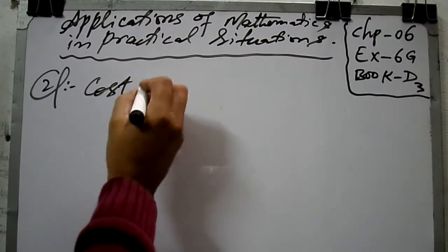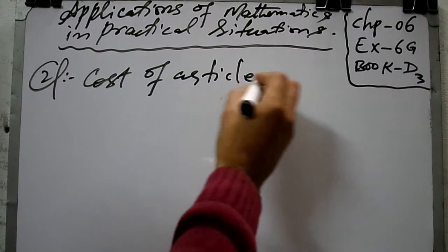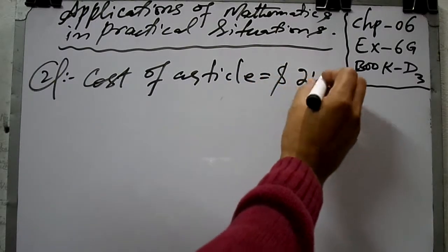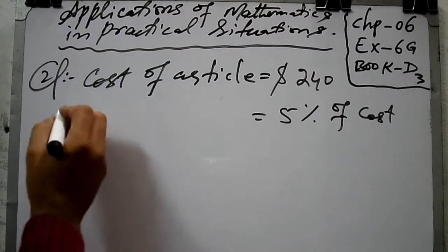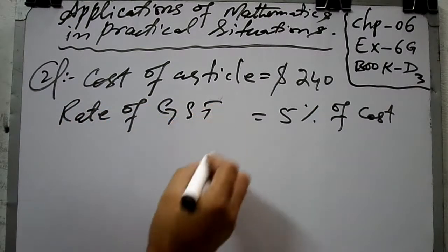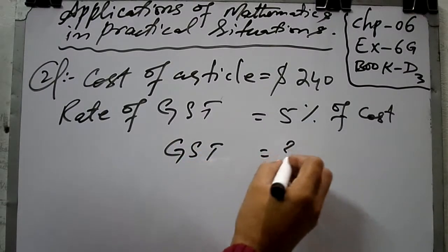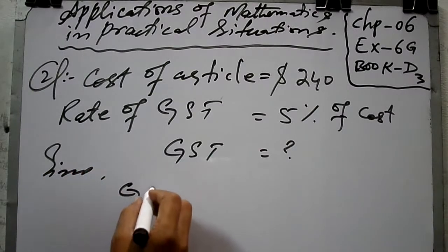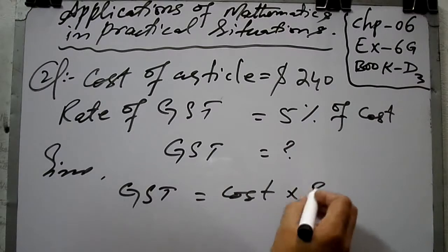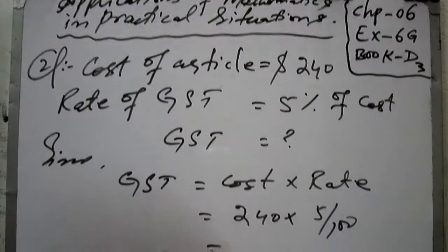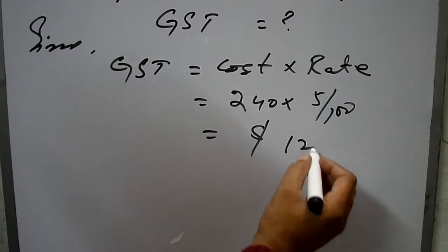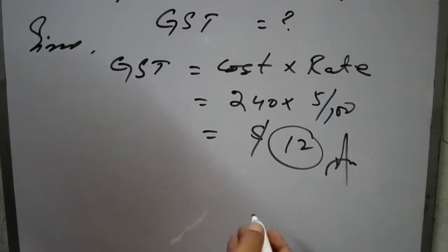Coming to question number two. Cost of article is equal to $240. Five percent of cost is your rate of GST — General Sales Tax. We have to find the GST. The formula is: GST = cost × rate, so 240 × (5/100).